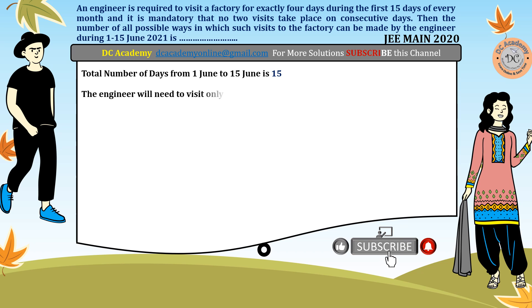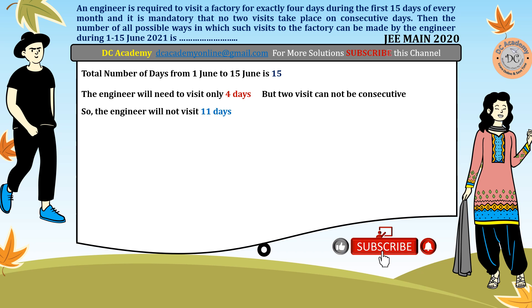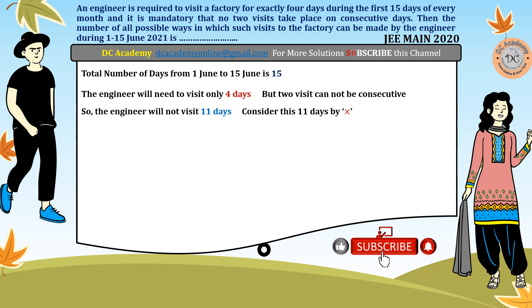The engineer will travel on only 4 days, so the remaining 11 days he will not visit the factory. No two visits are consecutive — that's the given condition. First, we consider those 11 days where he does not visit the factory, marking them with a cross. These are particular dates on which he is not present at the factory.